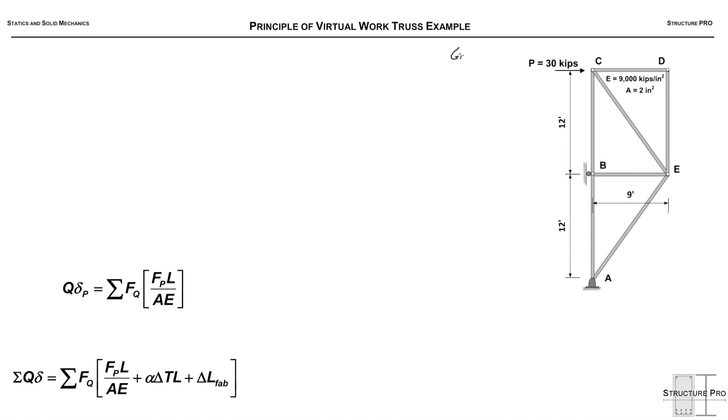Hey there, welcome to StructurePro. Here we're going to be doing an example on the virtual work method applied to trusses. So we're given this truss here, it has joints A, B, C, D, and E, and it has a 30 kip load applied at joint C horizontally. And we're asked to find the vertical deflection at joint D due to this 30 kip load.